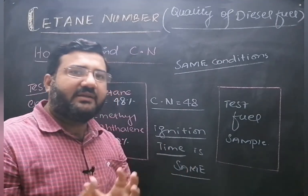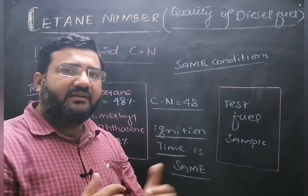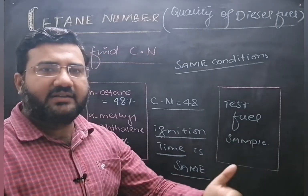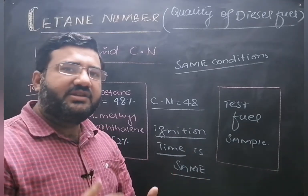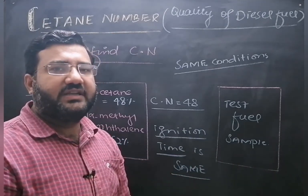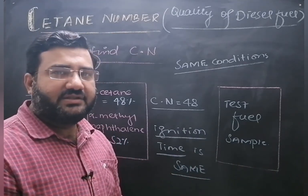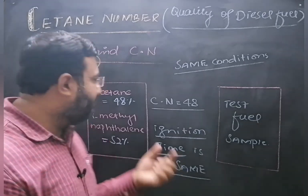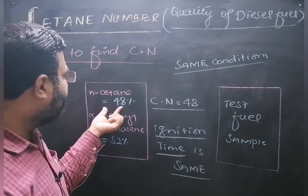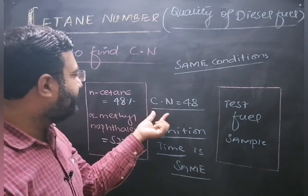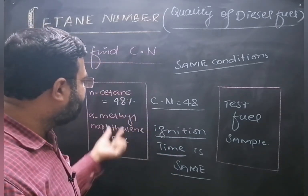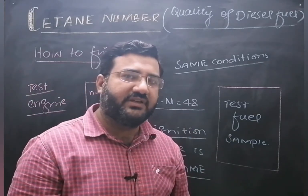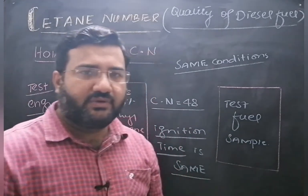In this way, by comparing the reference fuel with the test fuel and matching the ignition delay of both fuels, the percentage of normal cetane at which they match is the cetane number of the reference fuel, and that will be the same cetane number of the test fuel.